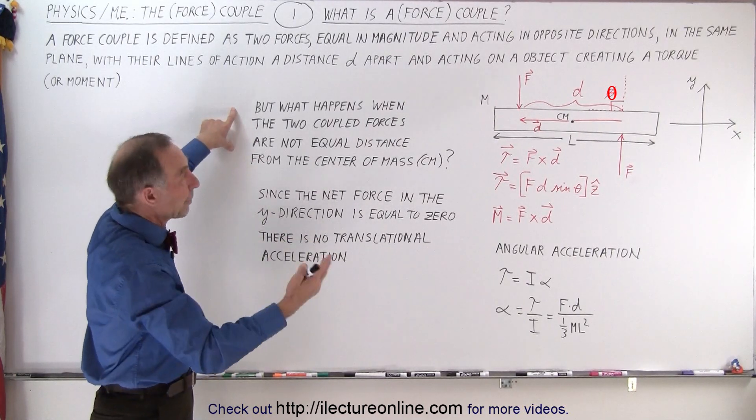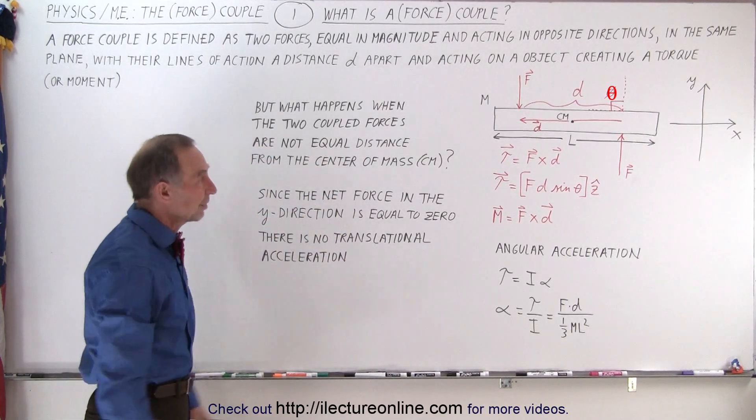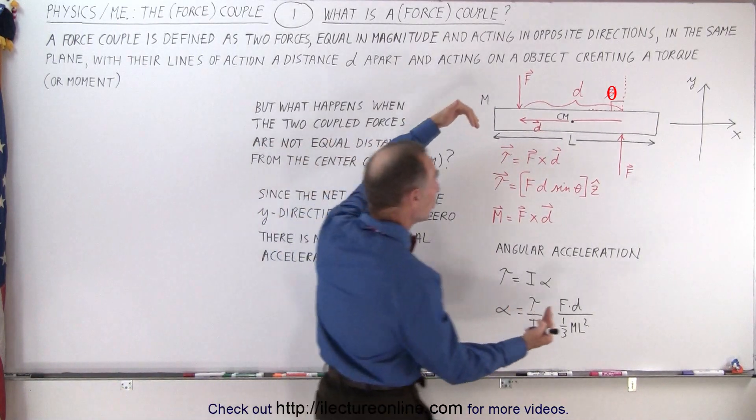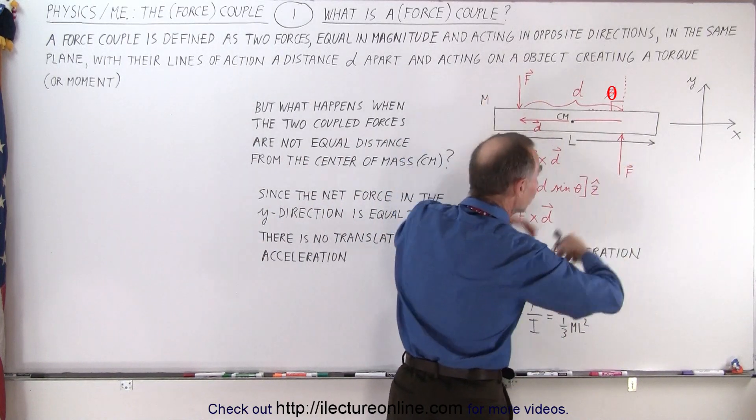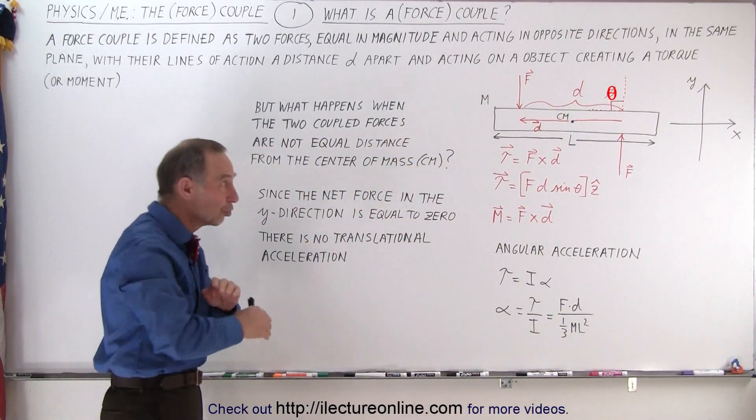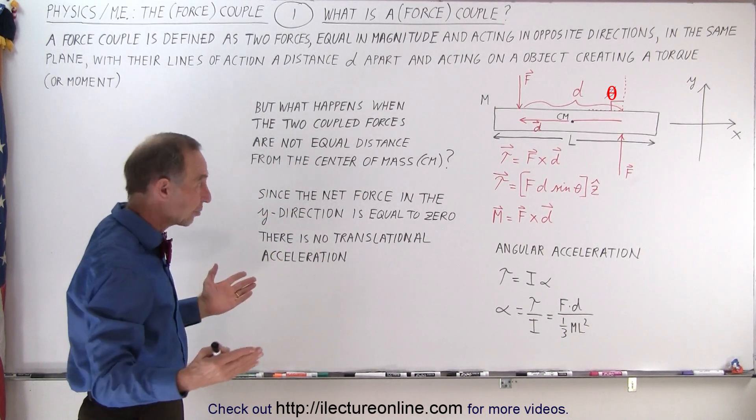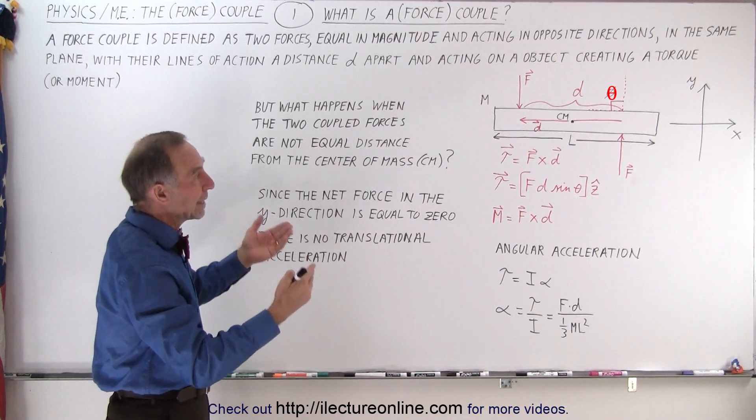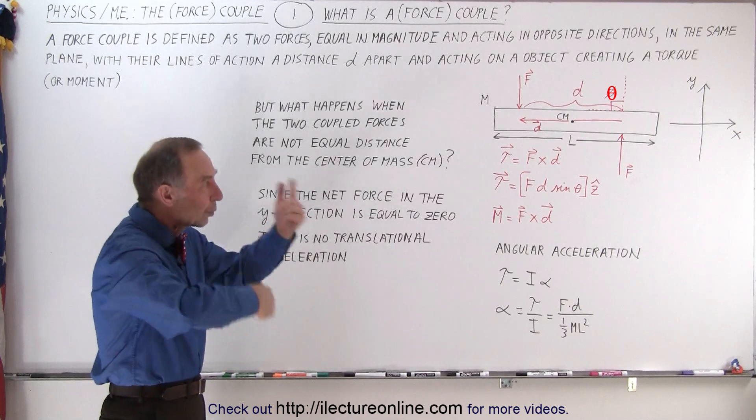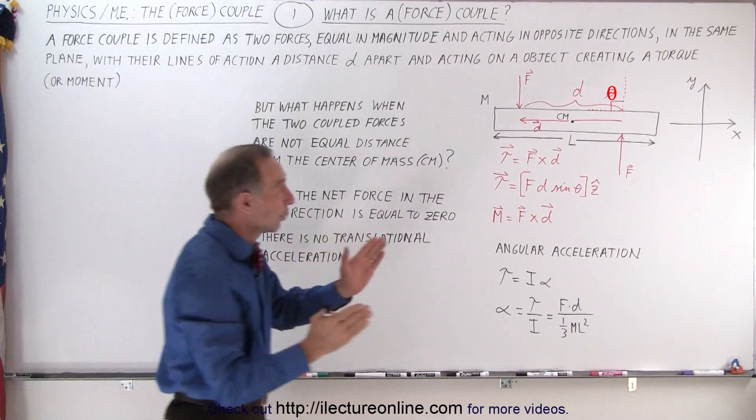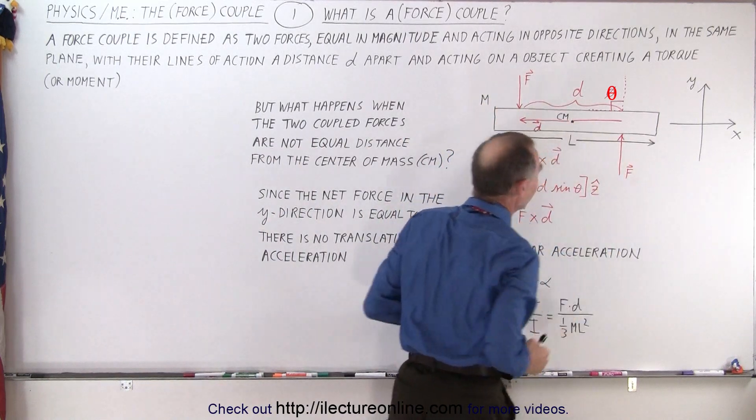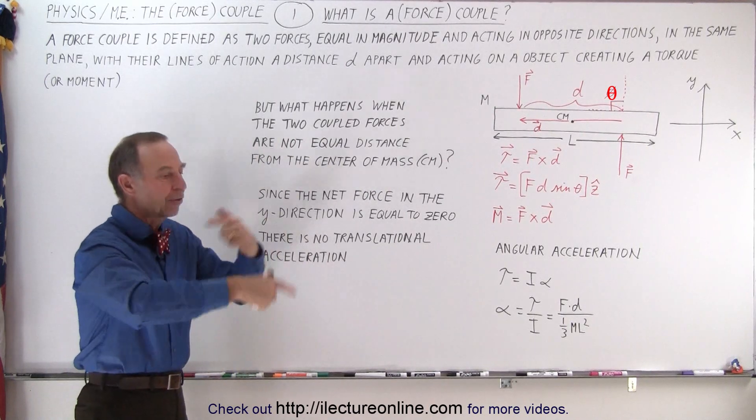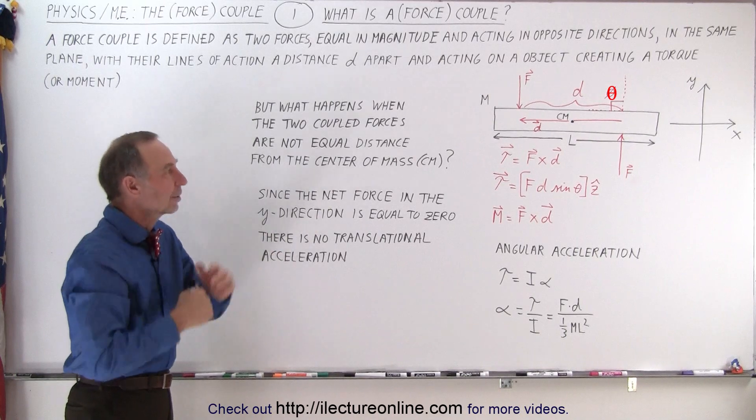So that's the question here—what happens when they're not equidistant from the center of mass? And secondly, we can say that since the net force in the y direction is equal to zero because we have two forces in opposite directions equal in magnitude, the force cancels out. There's no net force in the y direction, there's no force in the x direction. So therefore, there's no translational acceleration. If the object started out being at rest, the only thing that's going to happen is it's going to rotate about its center mass.